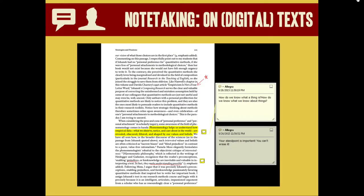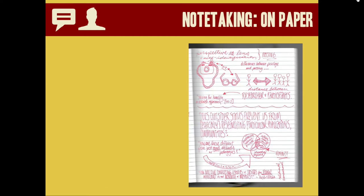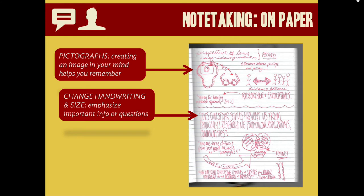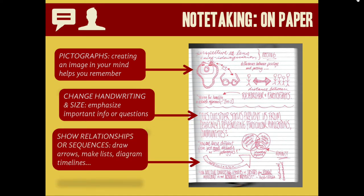You can also take notes on digital texts like PDF copies of journal articles. I highly recommend the sticky notes and highlight function in Adobe Reader and Adobe Acrobat for doing this — that way you save your notes. You don't have to worry about spilling coffee on a book or having to give your book back after you rented it. You can have copies of these notes forever. Just make sure you save the document before you close it out. You might also take notes on paper. I like writing pictures because some people are visual learners and it helps create an image in my mind that I can remember. Changing handwriting and size can keep you interested and awake, especially when taking notes in class, and also help emphasize important information. Showing relationships with ideas can help engage in that synthesis or form connections — drawing arrows, diagramming, making timelines or lists all can do these things.